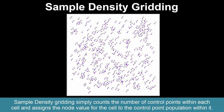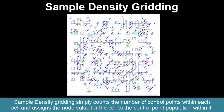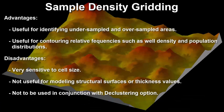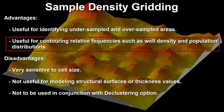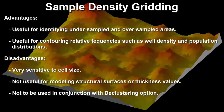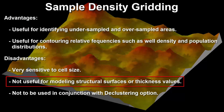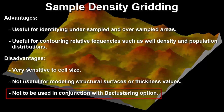Sample density gridding simply counts the number of control points within each cell and assigns the node value for the cell to the control point population within it. Advantages: useful for identifying undersampled and oversampled areas, and for contouring relative frequencies such as well density and population distributions. Disadvantages: it's very sensitive to the cell size, not useful for modeling structural surfaces or thickness values, and should not be used with the declustering option.